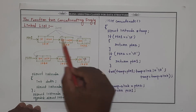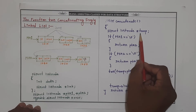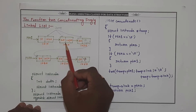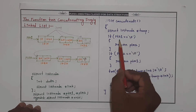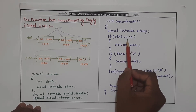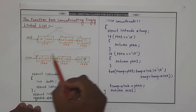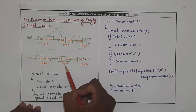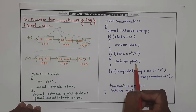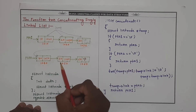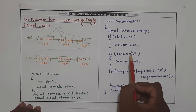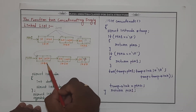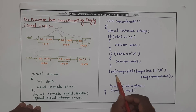First, we declare a temporary pointer. Then we check whether list 1 is empty — if PTR1 is empty, we return PTR2. Next, we check whether list 2 is empty — if PTR2 is empty, we return PTR1. In our example, both conditions are false: PTR1 is not null and PTR2 is not null. So we proceed to the iterative statement.